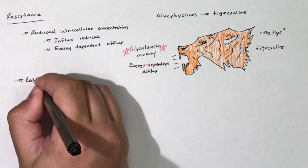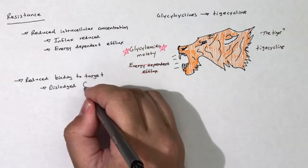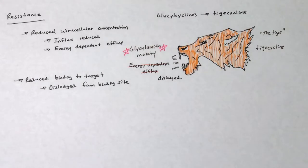The second mechanism of resistance involves the upregulation of a protein that dislodges tetracyclines or glycylcyclines from their target. Again, glycylcyclines are able to overcome this mechanism of resistance due to their higher binding affinity for the ribosome.